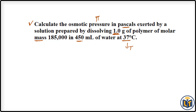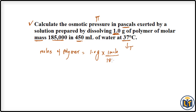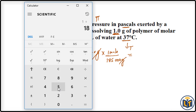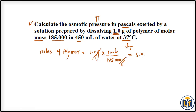First, let's calculate the moles of the polymer. Moles = mass / molar mass. So we have 1.0 grams divided by 185,000 grams per mole. Using dimensional analysis, grams cancel out, giving us 1 divided by 185,000. The value we get is 5.405 × 10⁻⁶ moles of solute.